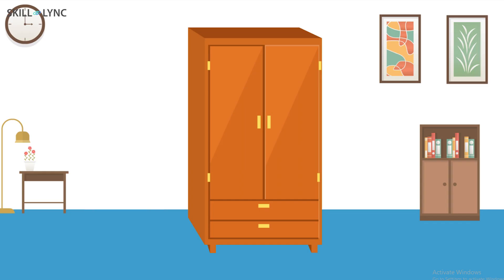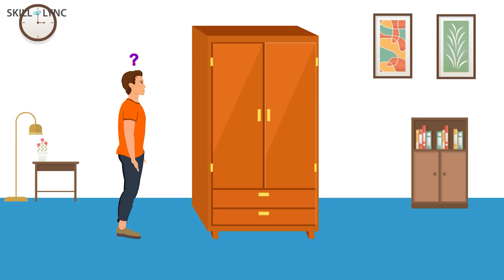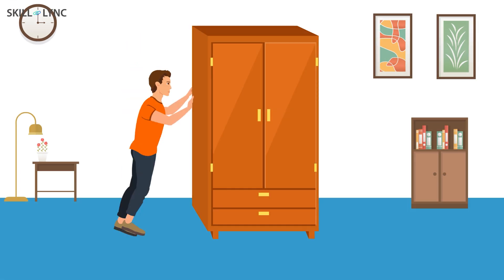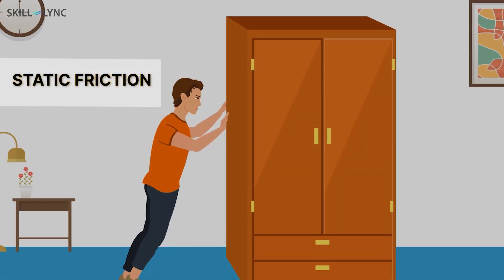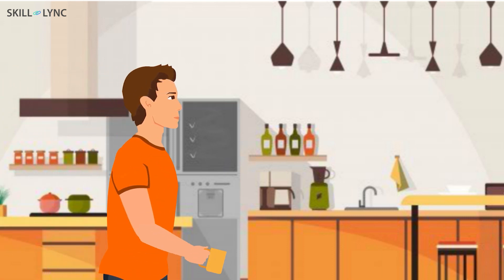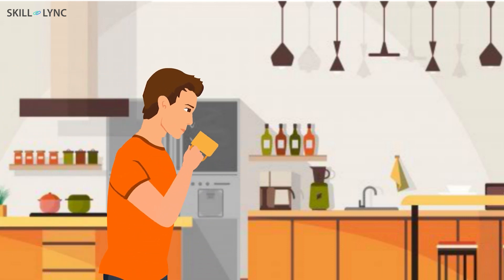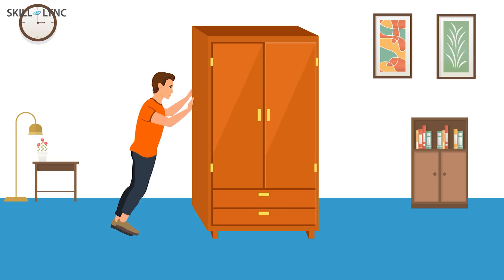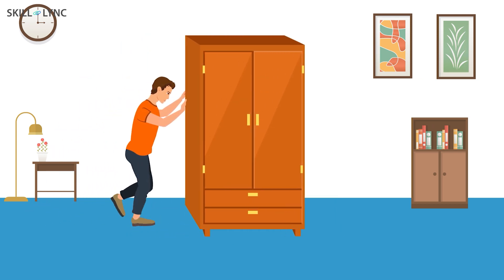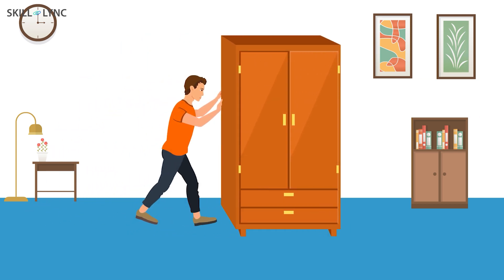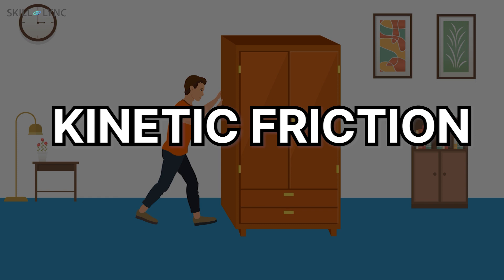Imagine this situation. You got a new almirah for your home. The delivery guy left it in the veranda, but you want to move it to your room. You push, you pull, you use all your strength, and the thing does not budge. Well, this is because of static friction. Now, you go to the kitchen and have a glass of your favorite energy drink. You go back to the veranda again and push it — voila, it moves! But there's still a little bit of difficulty in moving it. Well, this is because of kinetic friction.